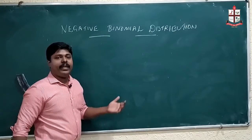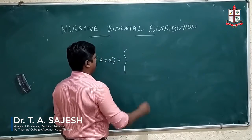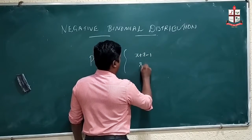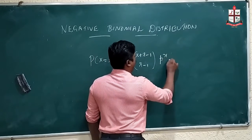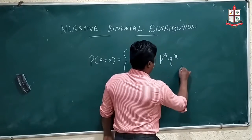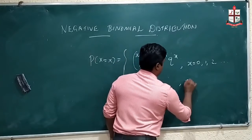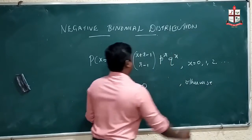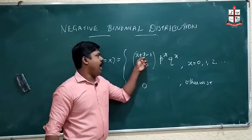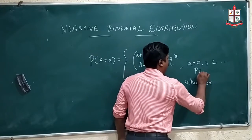The probability mass function of a negative binomial distribution is: P(X = x) = C(x + r − 1, r − 1) * p^r * q^x, where x takes values 0, 1, 2, ... and 0 otherwise. This is the PMF of the negative binomial distribution with parameters r and p, where q = 1 − p, so p + q = 1.